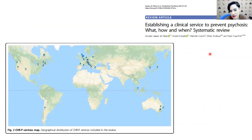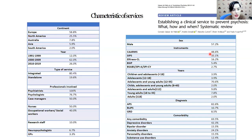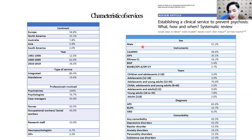We want to establish a clinical service to prevent psychosis and treat clinical high-risk subjects. There are such services around the world, especially in Europe, North America, and Australia. The professionals involved are mainly psychiatrists and psychologists, although other professionals like nurses or social workers may be involved. The service is usually integrated within the National Health Mental Health Service. Patients are mainly male, quite young, between 12 and 35 years old. They use the CAARMS for diagnosis, and as noted before, these subjects have a lot of comorbidity.